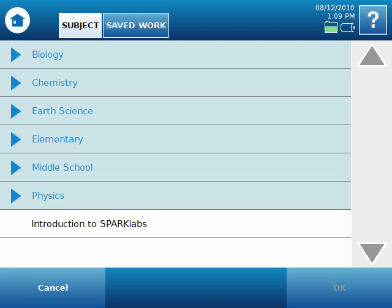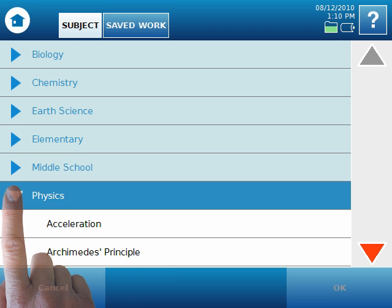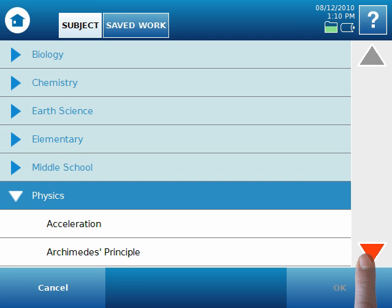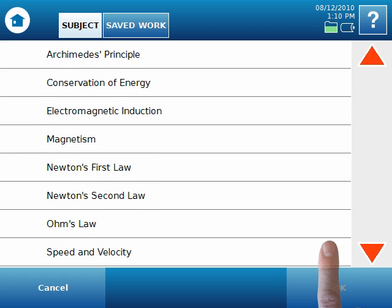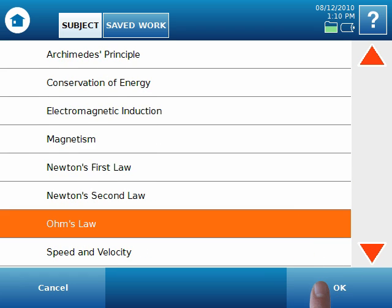On the Spark Science Learning System, you can see that the lab activities have been organized by subject into what we will call folders. To see the content of a folder, simply touch the blue arrow next to the subject. In this case, we'll be looking at the Ohm's Law Lab in the Physics folder. To open the Spark Lab, use the scrolling arrows to find the activity. Select it, and select OK.